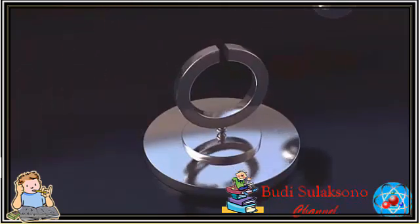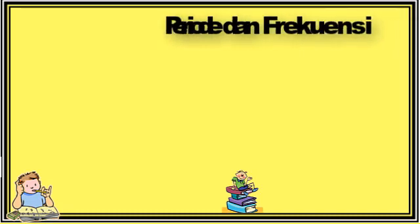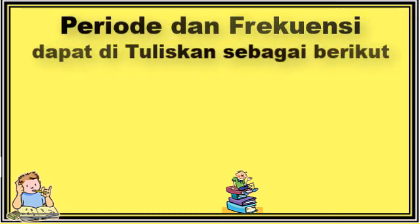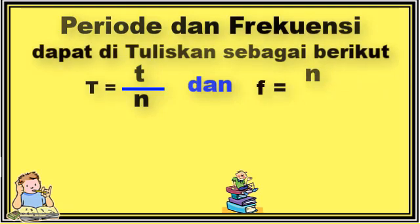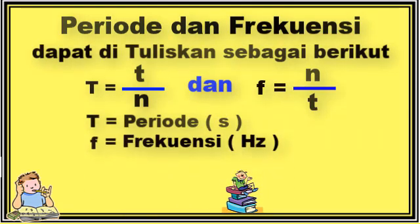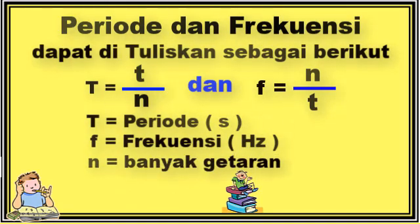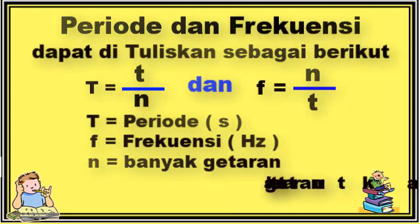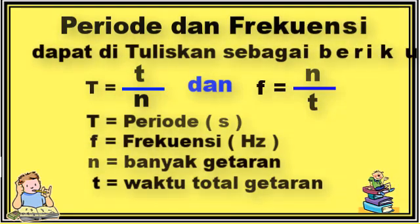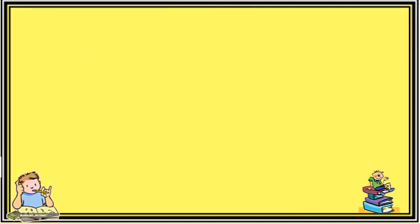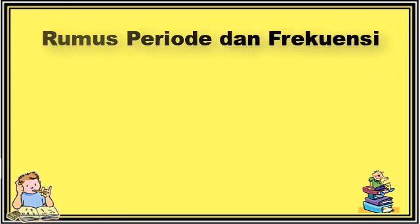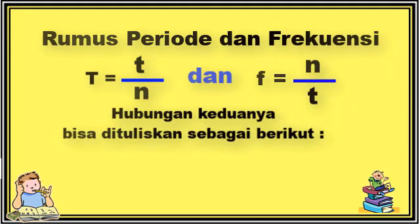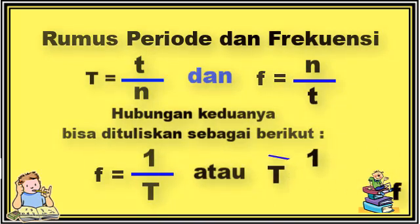Berdasarkan definisi periode dan frekuensi yang dikemukakan tadi, secara matematis, periode dan frekuensi dapat dituliskan sebagai berikut: T = t/N, dan F = N/t. Dengan T adalah periode dalam satuan sekon, F adalah frekuensi dalam satuan hertz, N adalah banyaknya getaran yang dilakukan, sedangkan t adalah waktu total selama benda bergetar. Rumus antara periode dan frekuensi memiliki hubungan terbalik, sehingga hubungan keduanya bisa dituliskan: F = 1/T, atau T = 1/F.